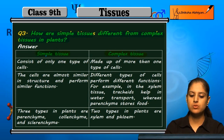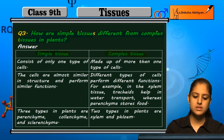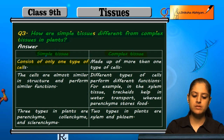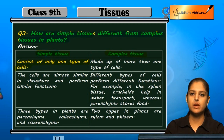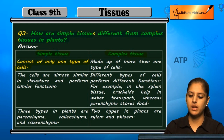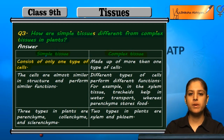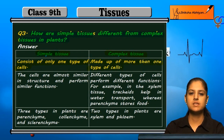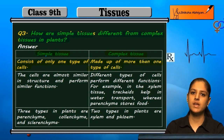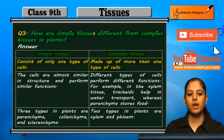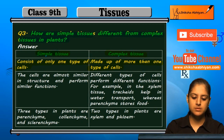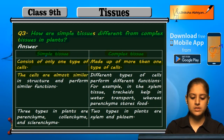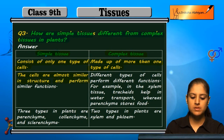Simple tissues in plants consist of only one type of cells, and they are almost similar in structure and perform similar functions. Complex tissues, on the other hand, are made up of more than one type of cells.